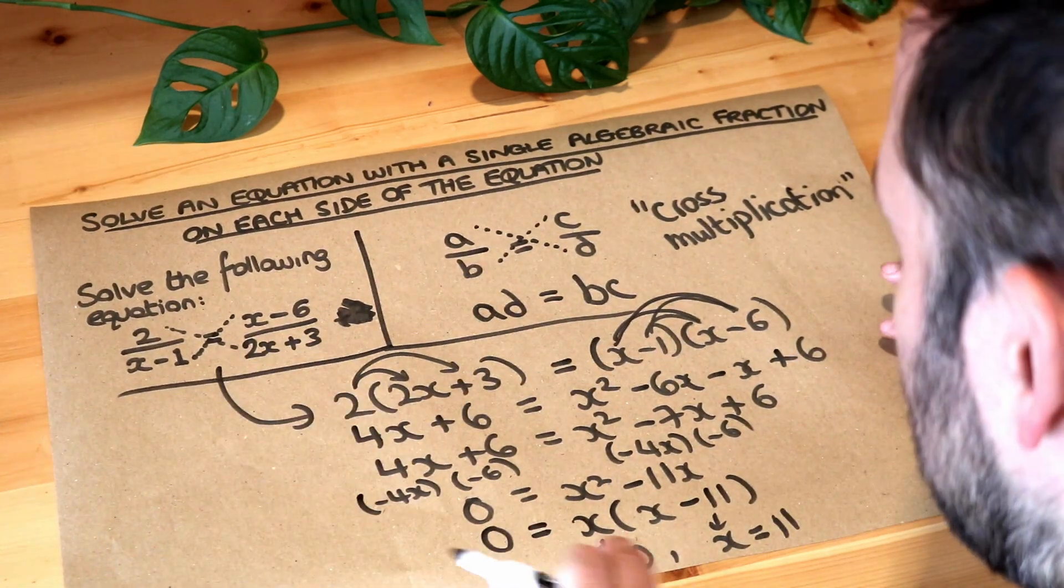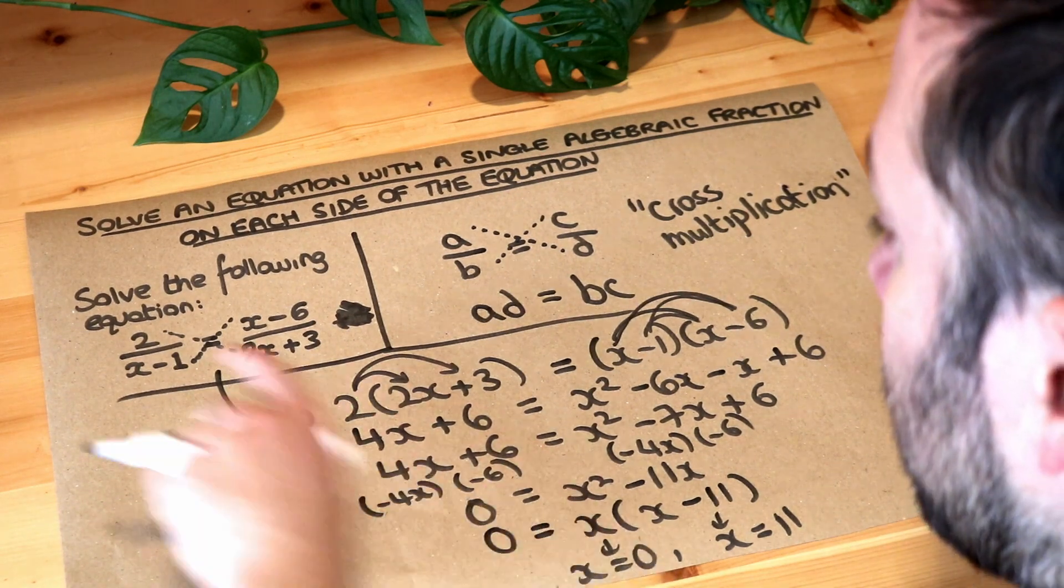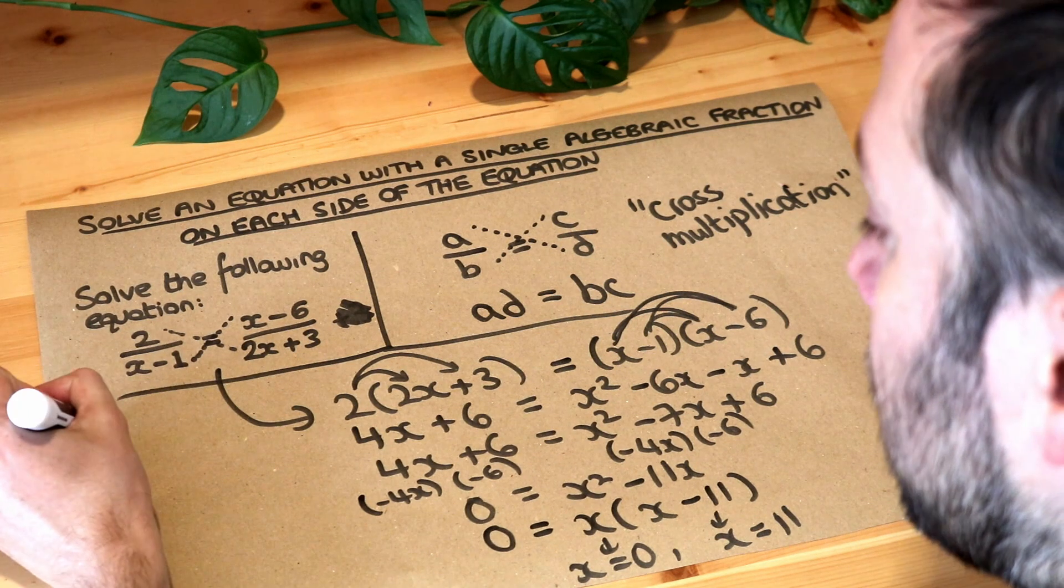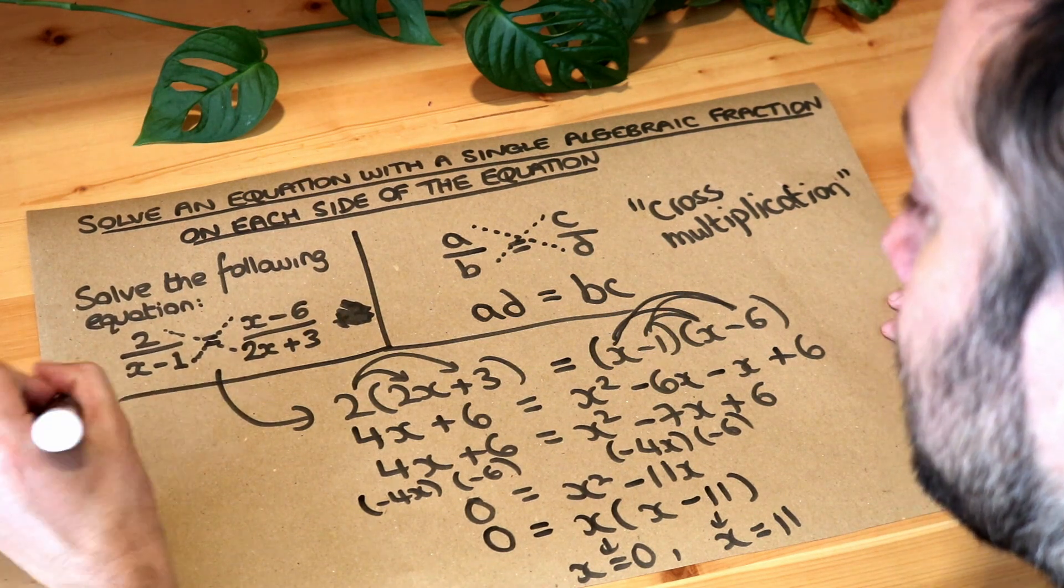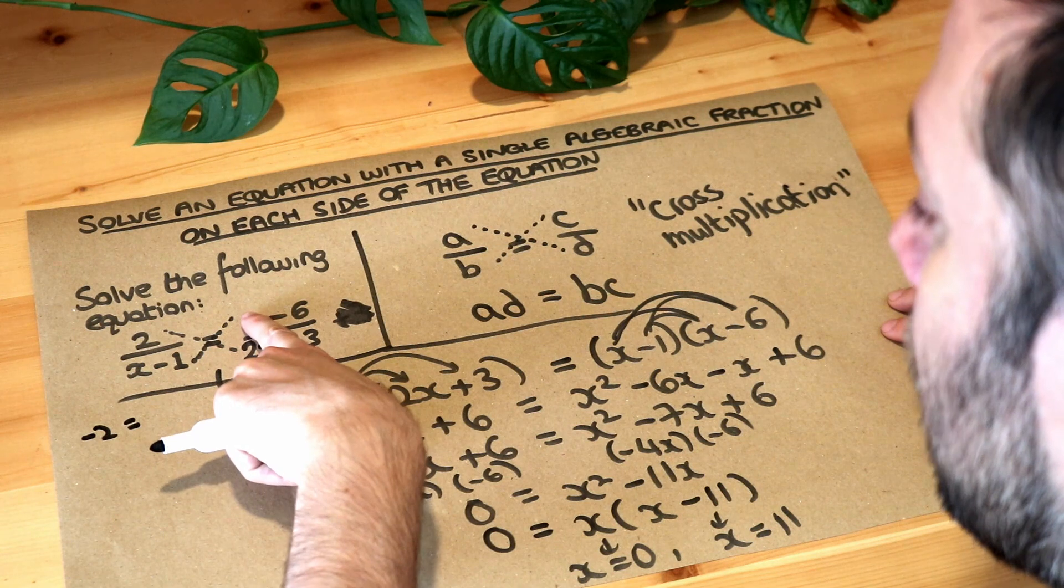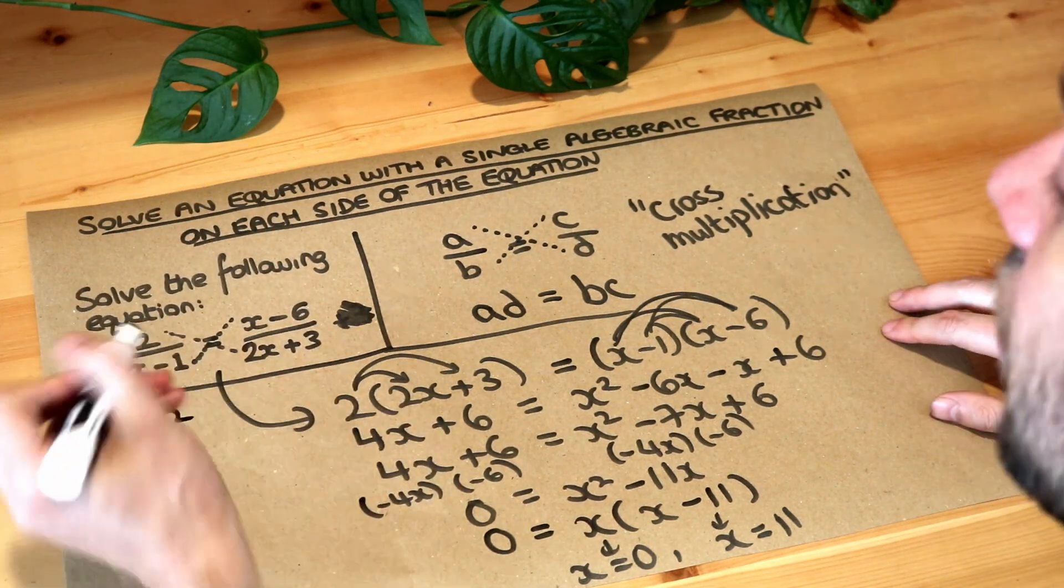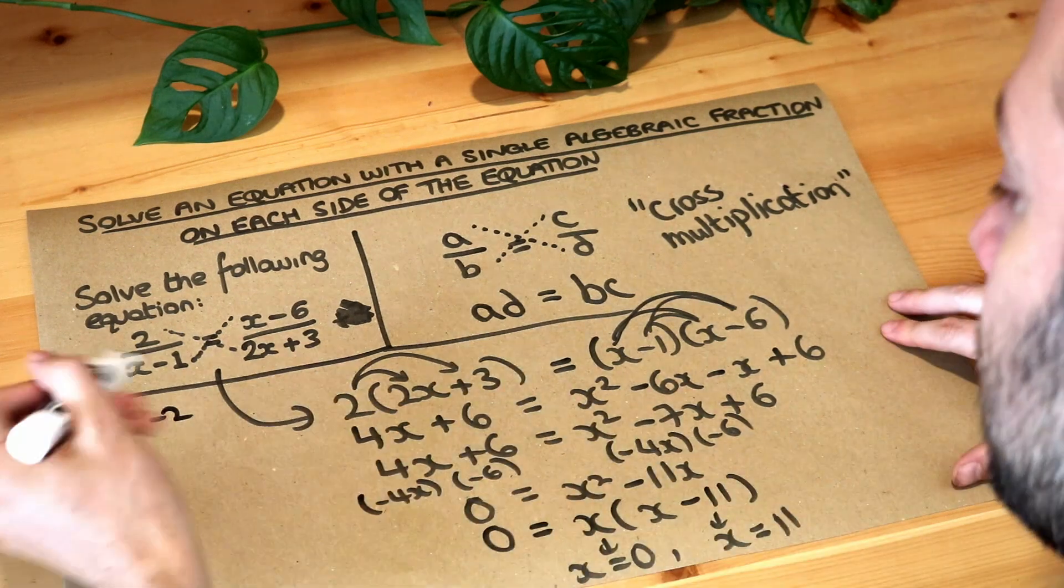And you can always substitute these values back into the original equation to check. So if I check with 0 for example, 2 over 0 minus 1, that's 2 over minus 1 which is minus 2. And if I put 0 into here I get minus 6 over 3 which is minus 2. So that does work because minus 2 is equal to minus 2.